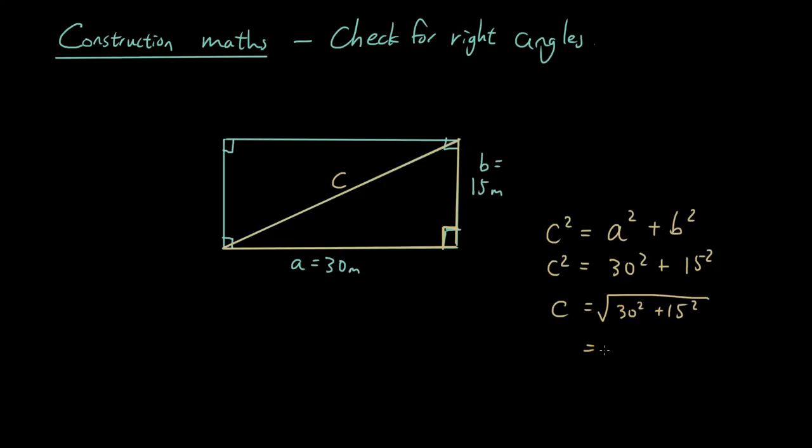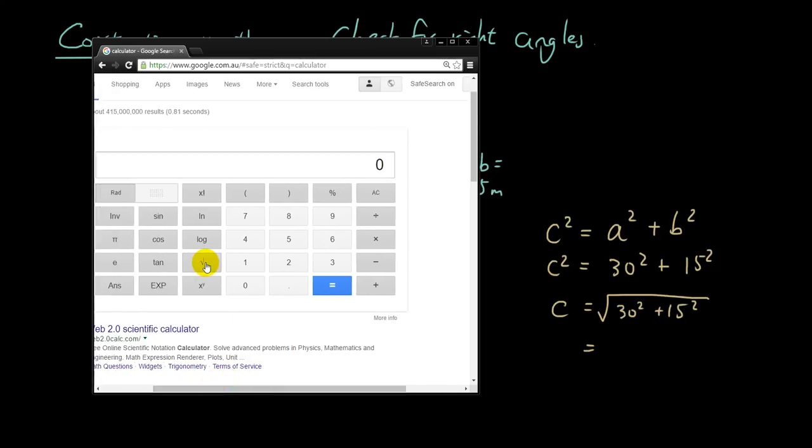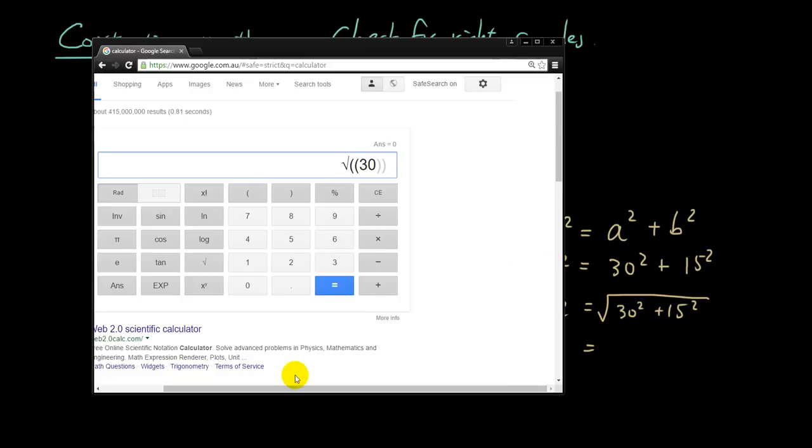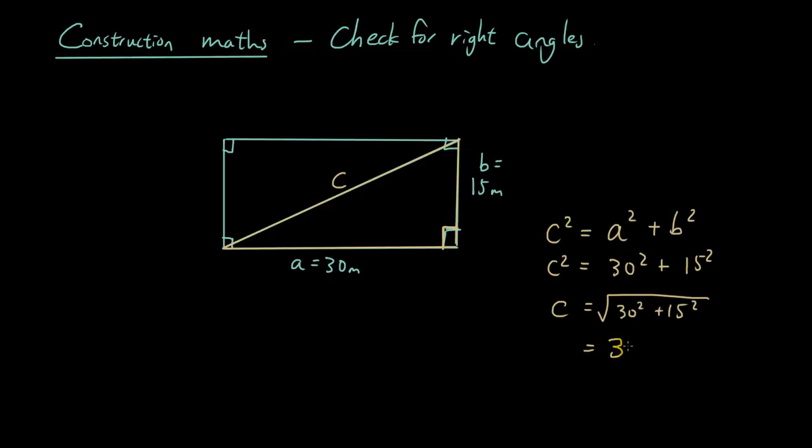C equals the square root of 30 squared plus 15 squared. Put that into the calculator, so it's the square root of bracket 30 squared plus 15 squared, and all of this inside the square root.